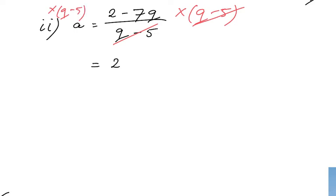AQ minus 5A equals 2 minus 7Q. And A times Q is AQ. And A times minus 5 is minus 5A. So I got rid of that fraction. And this is what I get.